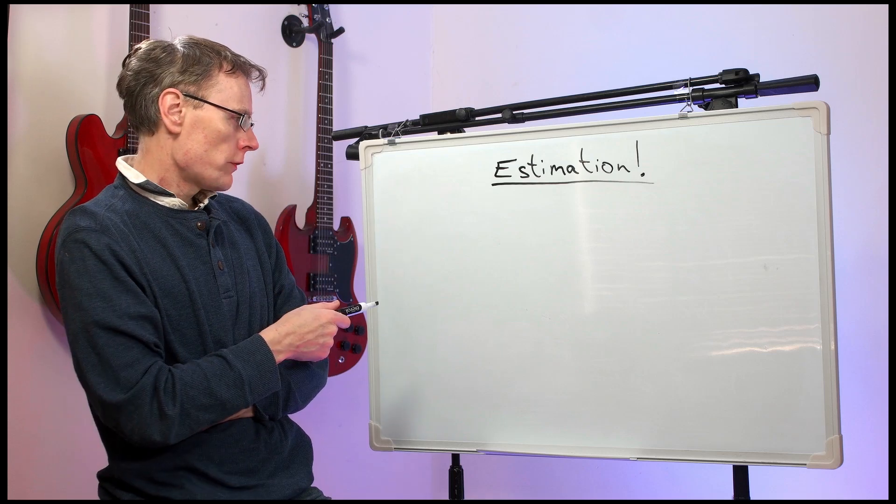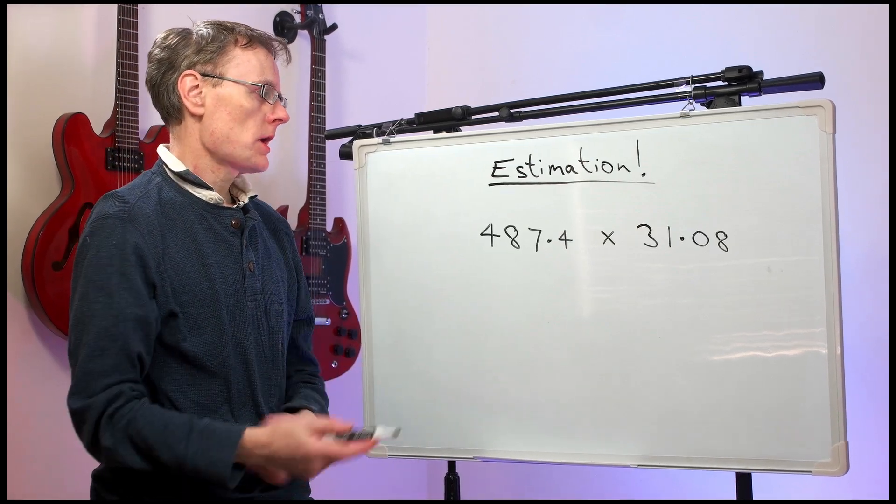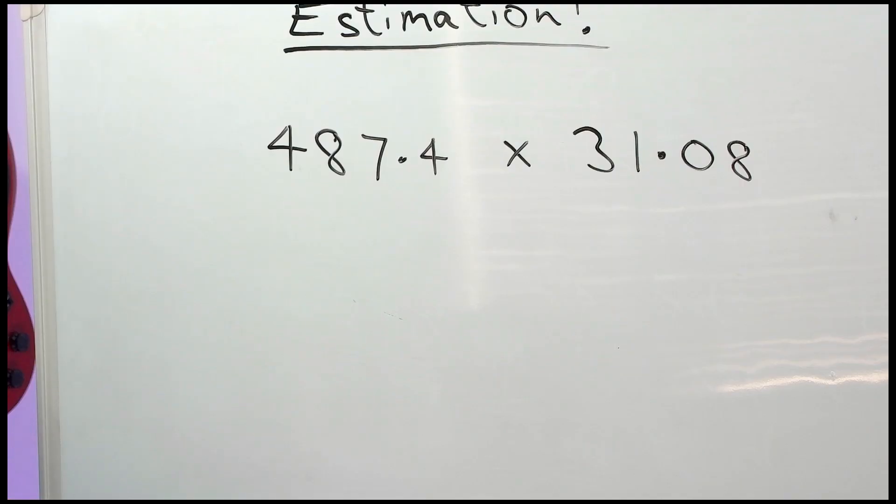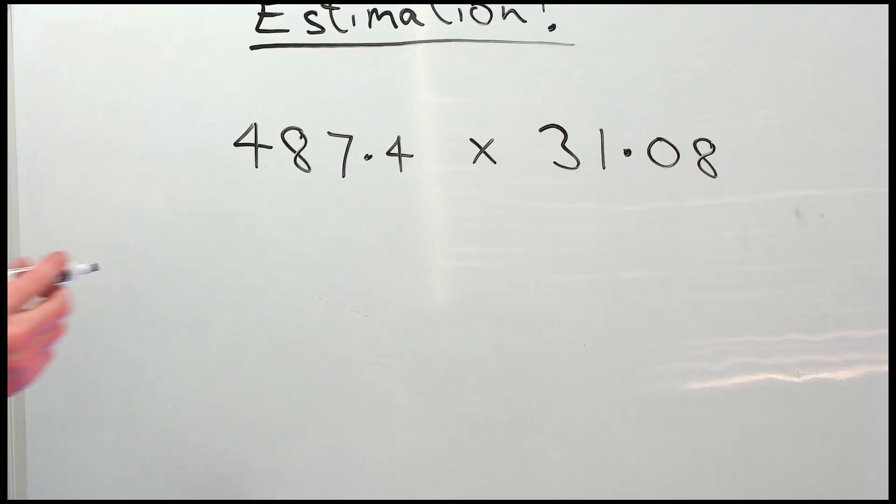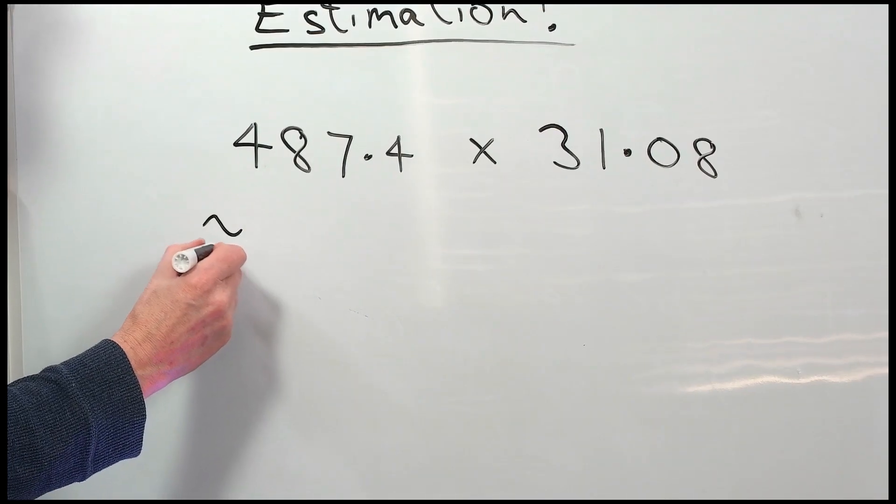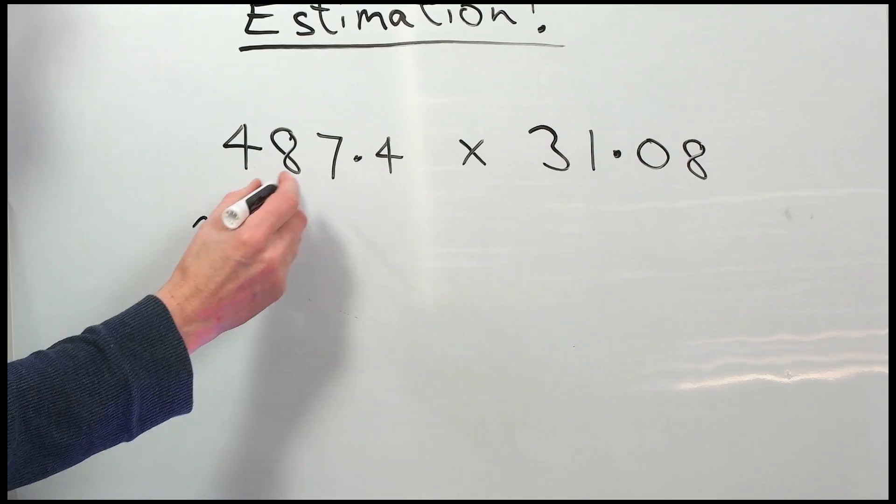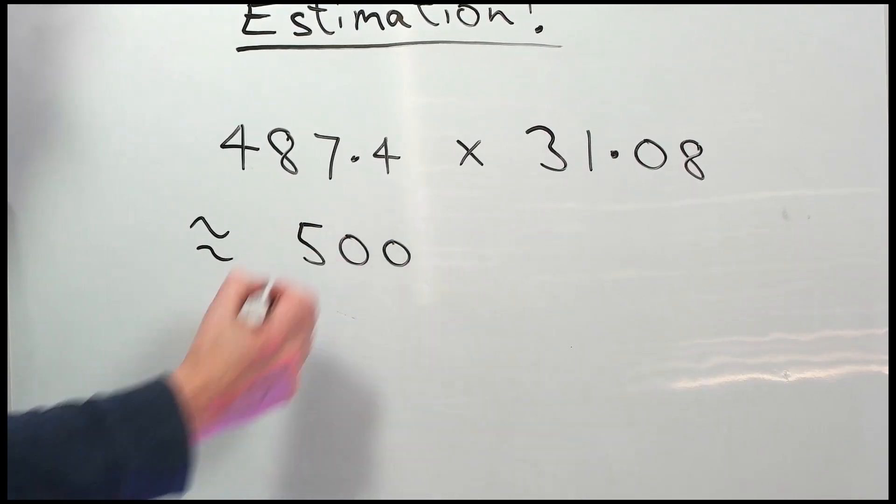Now look at this one. 487.4 times 31.08. So we can say that's approximately equal to 500. Nice big round numbers.